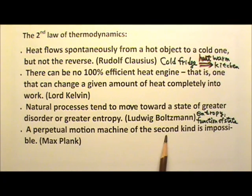The next statement of the second law is by Max Planck: a perpetual motion machine of the second kind is impossible. A perpetual motion machine is a self-sustained machine that produces work. A frictionless pendulum or orbiting planet will exhibit perpetual motion but without producing work, so they are not perpetual motion machines. A perpetual motion machine of the first kind violates the first law of thermodynamics, while one of the second kind violates the second law of thermodynamics.